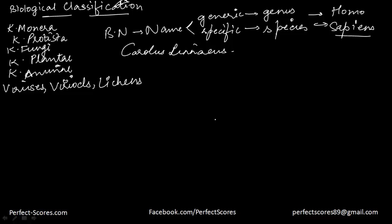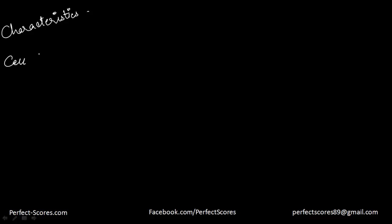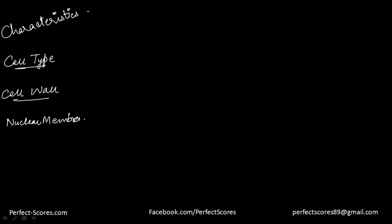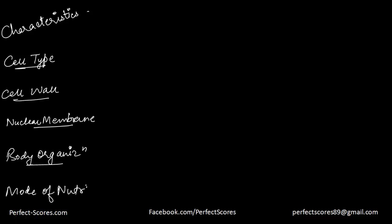You may want to take down notes on this. What are the common characteristics that we focus upon? There are basically five characteristics. First is the cell type. Second is the presence or absence of a cell wall. The third thing is a feature of the nuclear membrane — that is the part of the nucleus that covers and encloses it. Then the fourth feature is body organization. And then the mode of nutrition — how do they actually get nutrition?